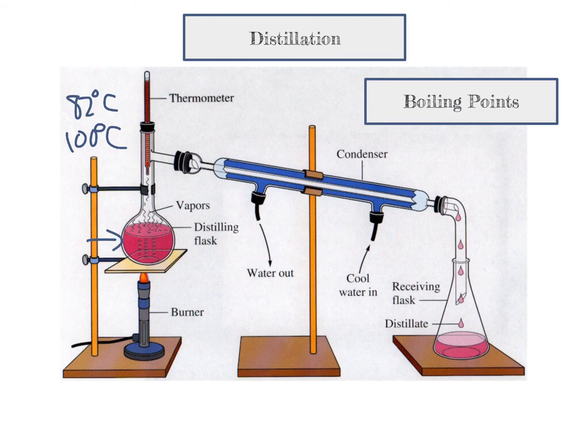You don't want it to get too hot because you don't want water vapors to escape as well, but if you heat it just right to 82 or 83 degrees Celsius, the isopropyl alcohol molecules will vaporize and travel down this thing called a condensing tube.